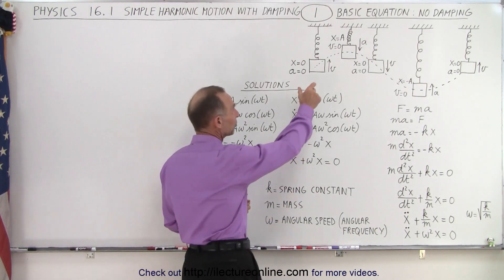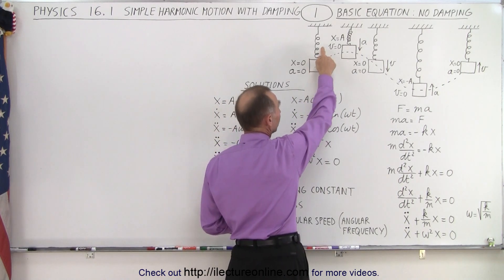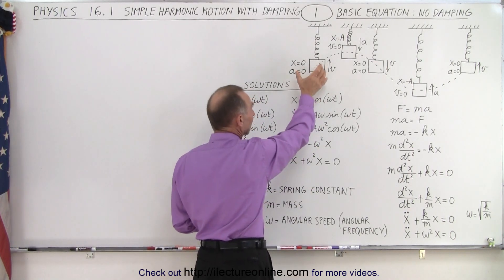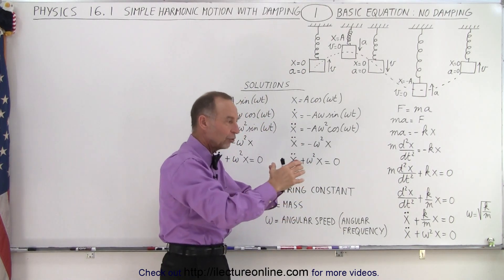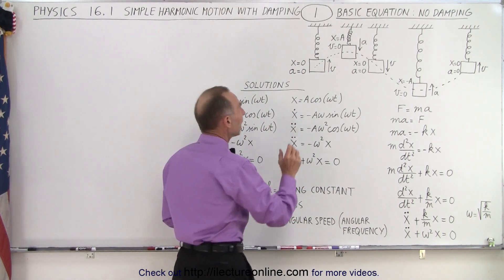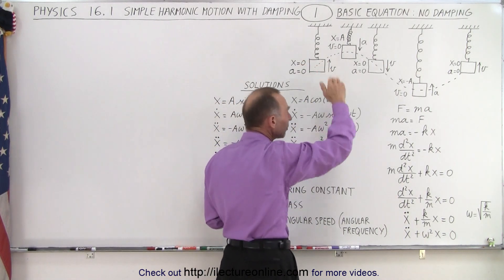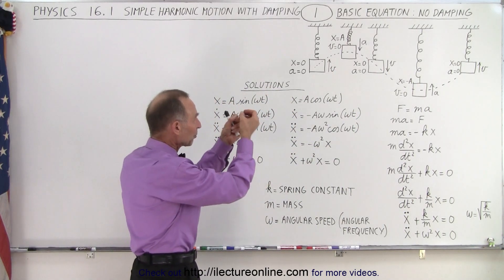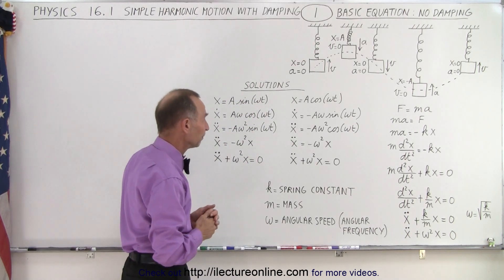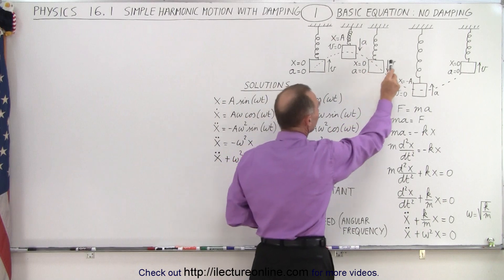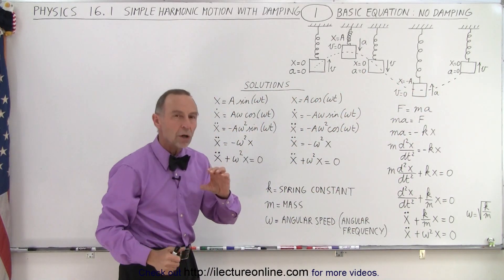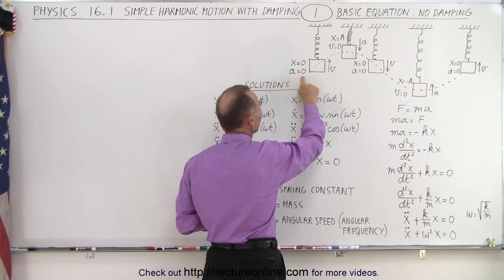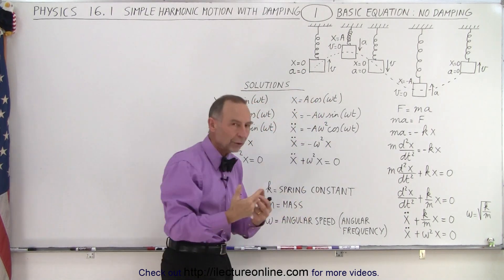Here we graphically show when we have an object hanging from a spring. The spring has a spring constant k and the object has a mass m. Once we allow it to balance — hanging from the ceiling until it's at the equilibrium point — the mass is at the position where there is no net force, no acceleration, and position is therefore zero. That's the equilibrium point.